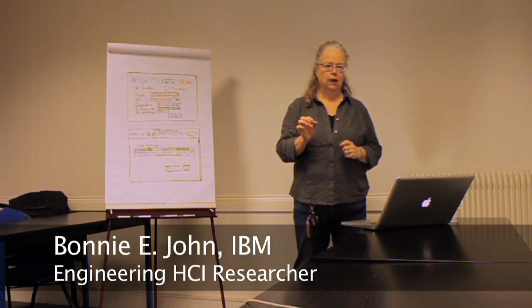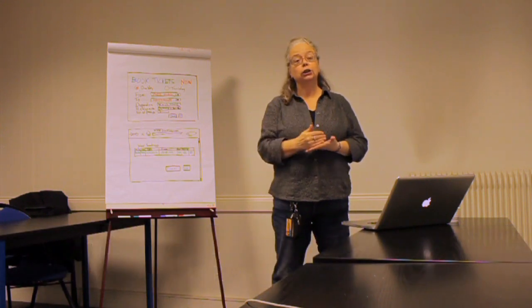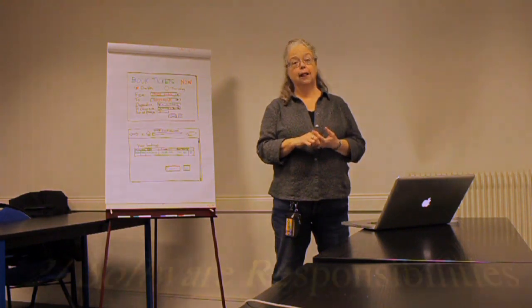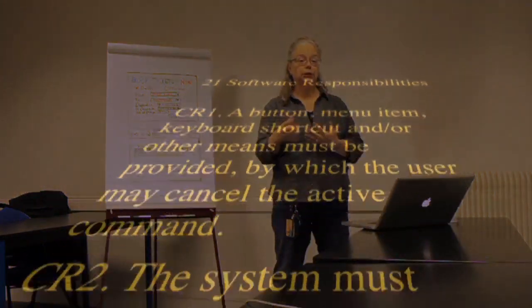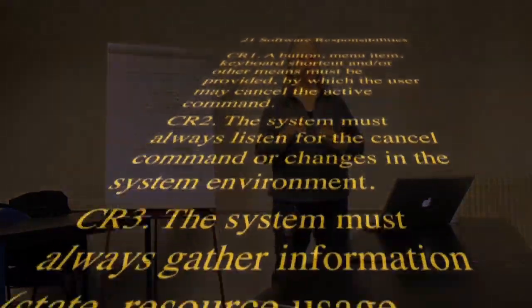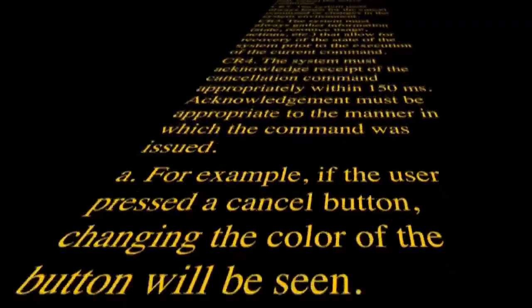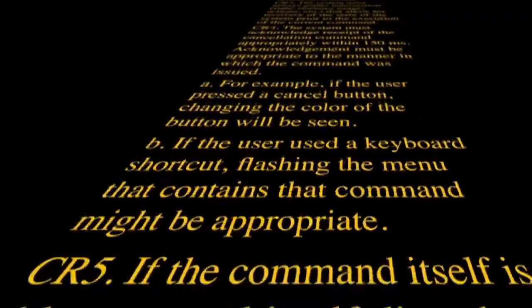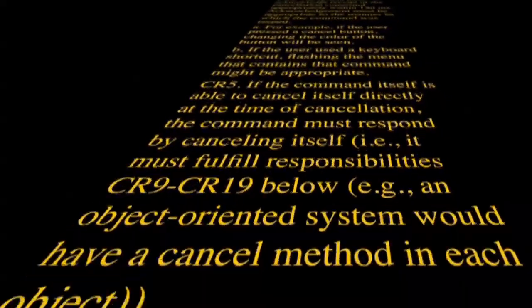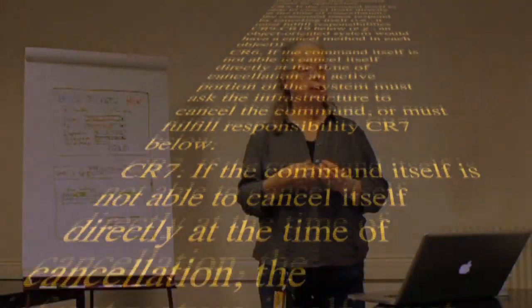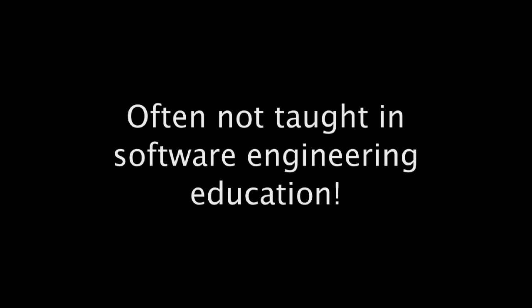There's more to cancel than just adding a button. In fact, years of engineering and HCI research has identified 21 software responsibilities that a software engineer would have to consider and build into their system to implement a truly usable cancel that works for people. And we can express those things in a list of responsibilities or in sample solutions in component diagrams or sequence diagrams. And the problem is that things like implementing cancel and thinking about all these things are not taught in software engineering education.